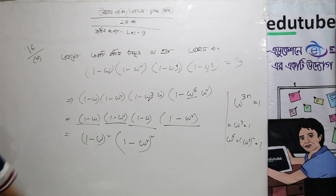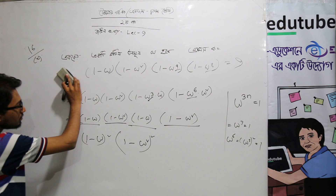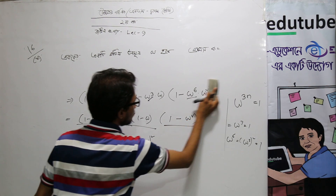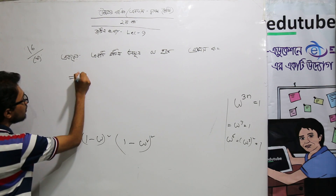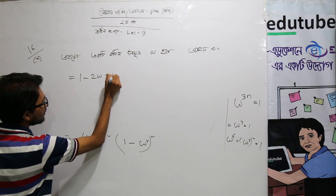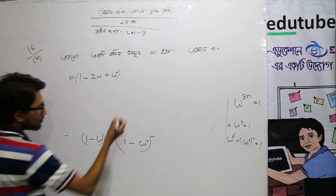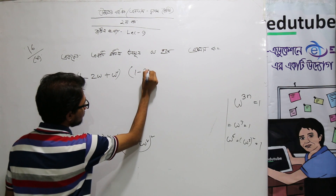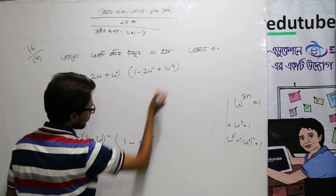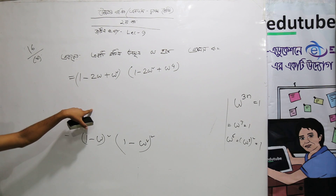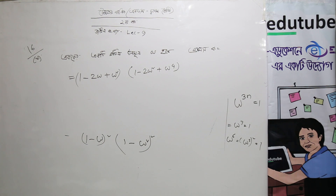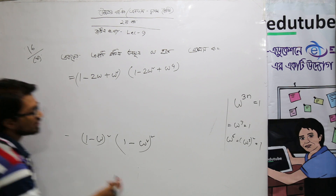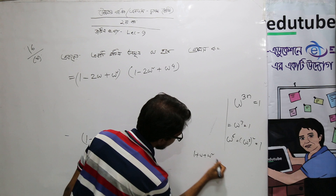Let's take the whole squared. Starting with square root of 1 minus 2 omega squared minus 2 omega squared. This is 1 minus 3 omega squared minus 2 omega squared. We need to write 1 plus omega plus omega squared equals to 0.